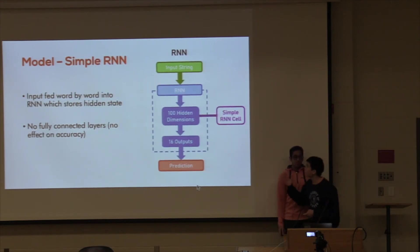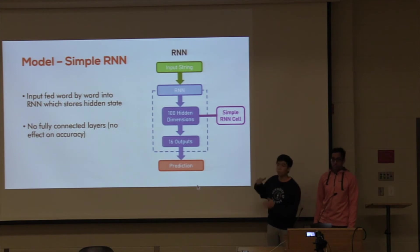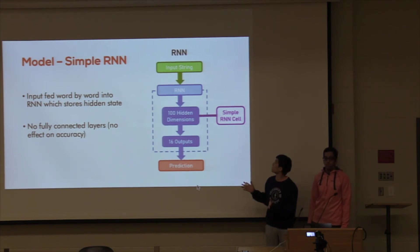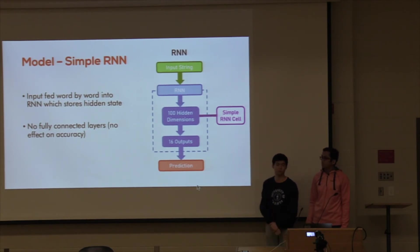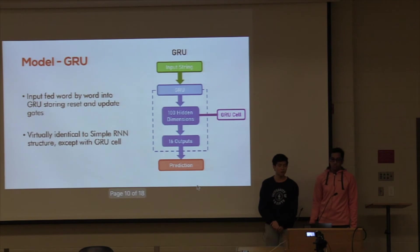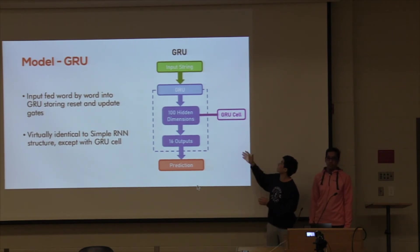The next model we used is a simple RNN, since it is mostly the standard for natural language processing. We chose an input string, and the RNN has 100 hidden dimensions with a simple RNN cell and 16 outputs for the prediction. We also used a GRU, which is a more advanced version — it's the exact same model except we replace the simple RNN cell with a GRU cell.